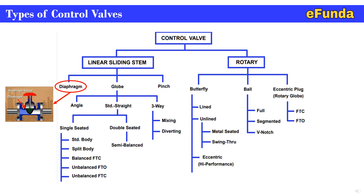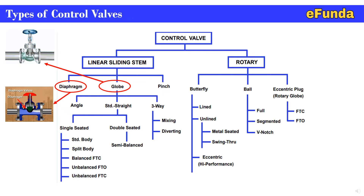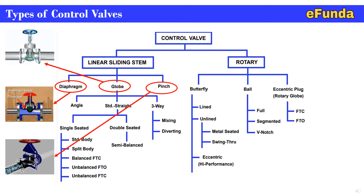The second type is the globe type valve, also called a stop valve or shutoff valve. The opening and closing parts of the globe valve can be seen from the animation, where the plug shape is the valve disc, the sealing surface is flat or conical, and the valve disc moves linearly along the center line of the fluid. In the animation, the globe valve is operated by a handwheel, though for a control valve, automatic operation with an actuator is required.